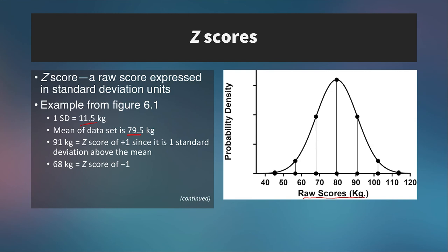A z-score is just a raw score converted into the units of standard deviation. Here are the lines marking the standard deviations — plus one and minus one standard deviations from the mean — right at 91 kilograms and right at 68 kilograms. Now if we know that the mean is 79.5 and the standard deviation is 11.5, we can see that this distance is actually 11.5 between these two standard deviation points.